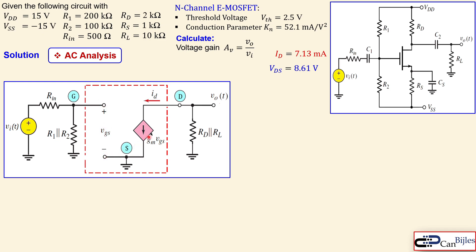The MOSFET small-signal model (shown in a dashed red box) contains VGS as the controlling voltage and a voltage-controlled current source ID = GM·VGS. With C2 shorted, RD and RL both connect to AC ground from the drain node and appear in parallel. Unlike a BJT, there is no input resistance Rπ at the gate for an ideal MOSFET.